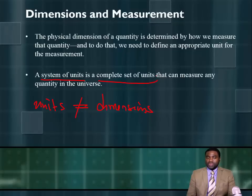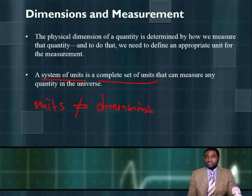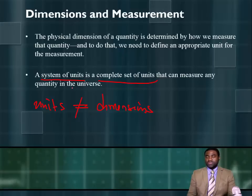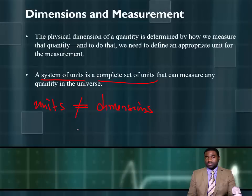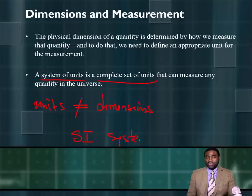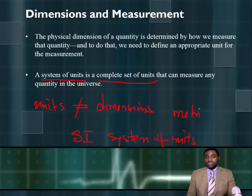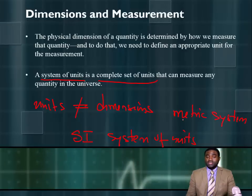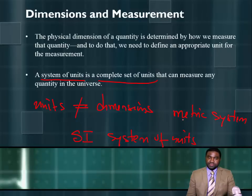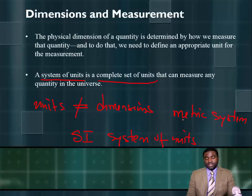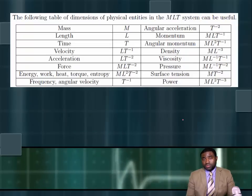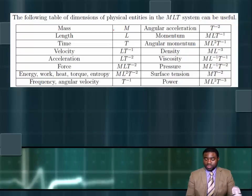A system of units is a complete set of units that can measure any physical quantity in the universe. There are different systems of units, and it is important for you to be able to convert from one system of units to the next. In this course, we will be dealing with the SI system of units, otherwise known as the metric system. You should be able to convert from one unit system to another and understand what we mean when we talk about the dimension of a physical quantity.